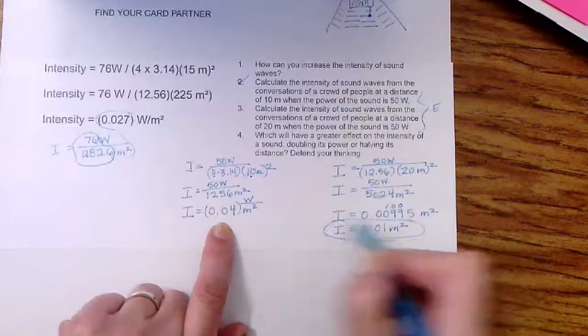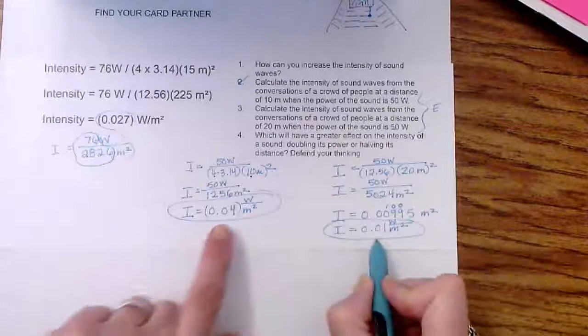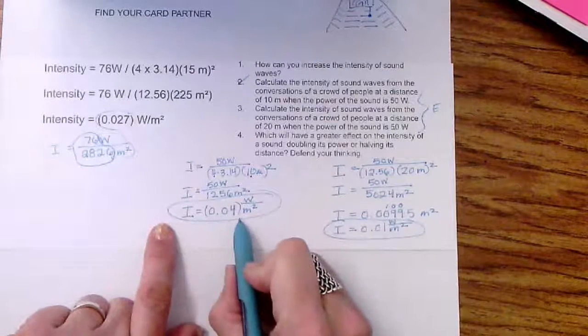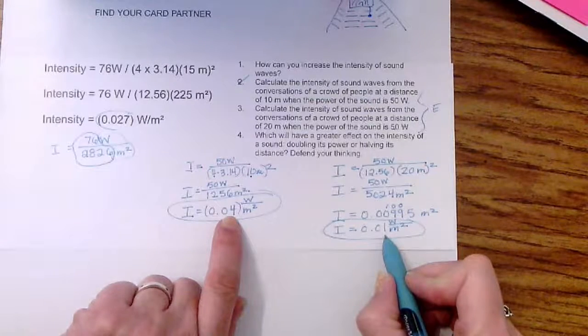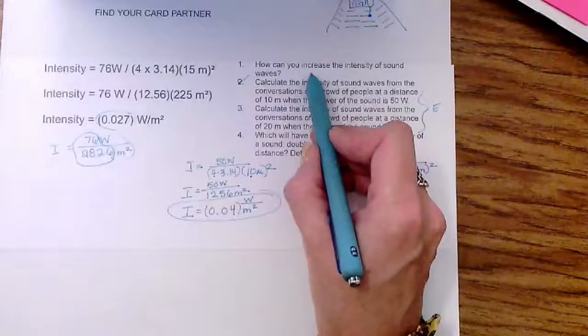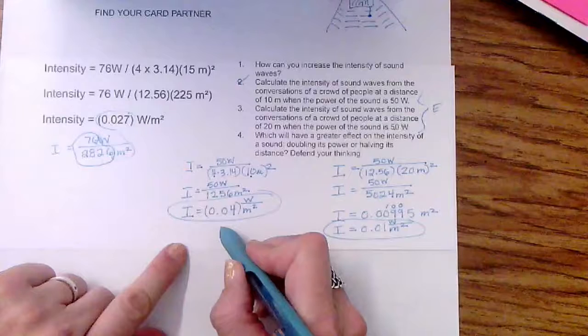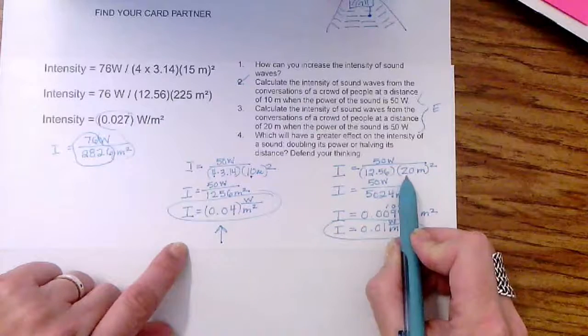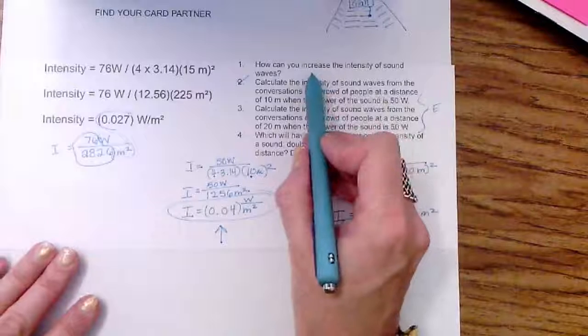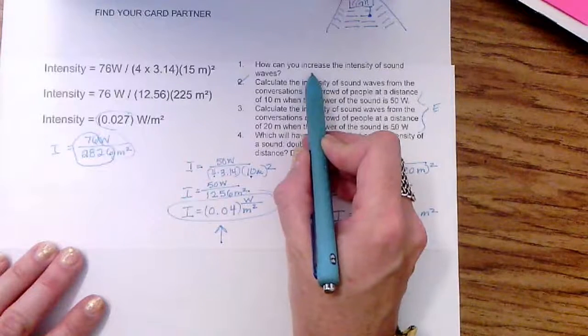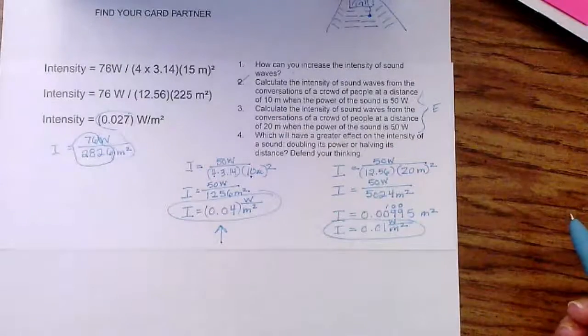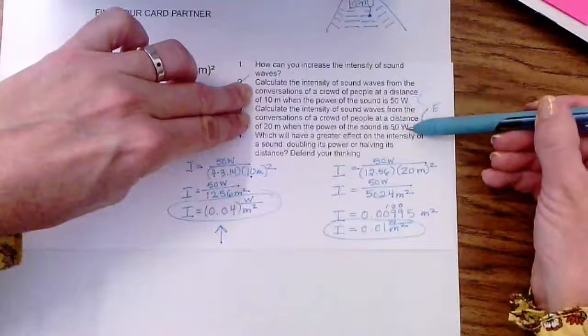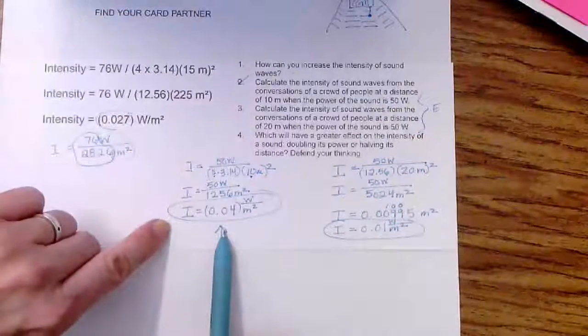So these are the two answers, don't forget my power, that I'm comparing. And I know that 0.01 is less intense than 0.04 because this is like saying four one hundredths and this is only one one hundredth. And so when I think about this question of how can I increase the intensity of sound, I see that this one is more intense. And the biggest difference is that it is closer. So by being closer. So my claim would be to increase the intensity of sound waves, I need to sit closer to the source of the sound. My evidence for this is that I have calculated two different distances with the same power and found that the shorter distance was more intense.